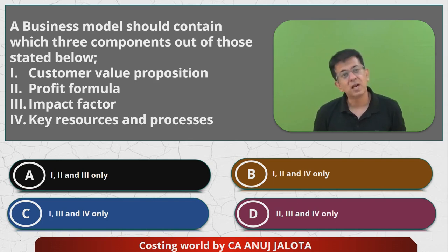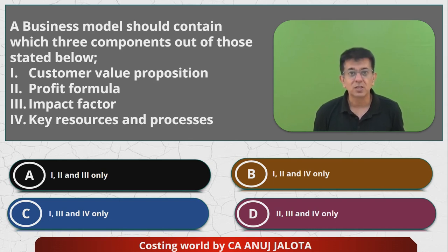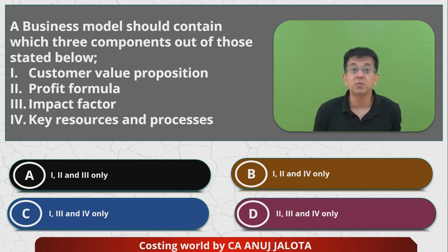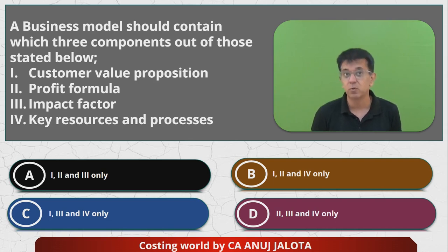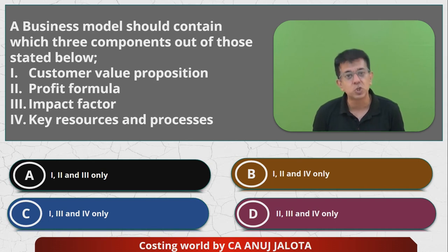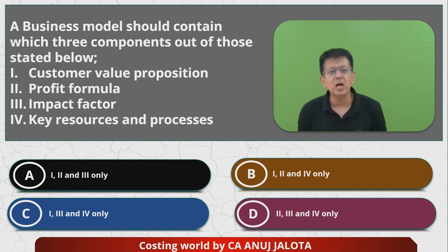There are four things mentioned. First, customer value proposition — what you have in store for the customer, why will a customer buy your product or service. Second, profit formula — how will you earn profits, your revenue minus your cost. Third, impact factor — how will you cause impact. Fourth, key resources and processes — which resources and processes you are going to employ in order to achieve the results you envision for your business.